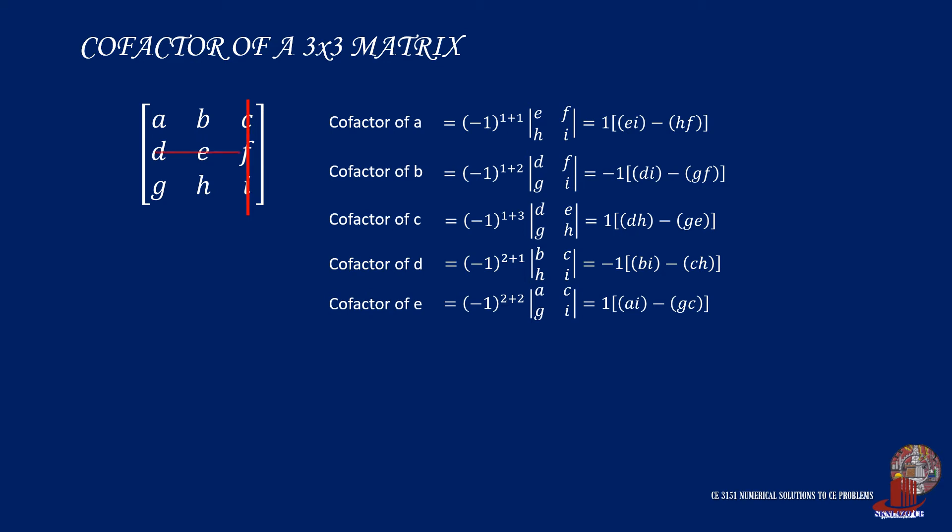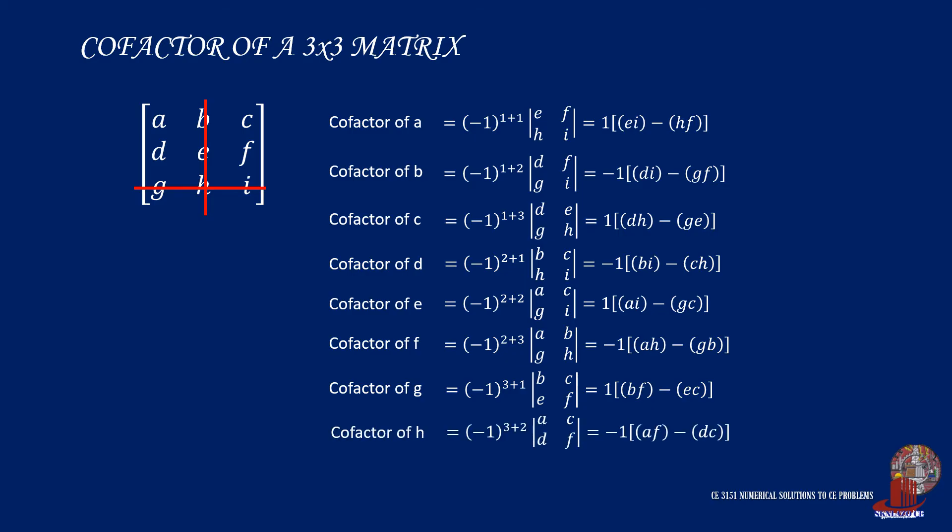For cofactor F, elimination of row and column will show negative 1 times the quantity of AH less GB. Take the cofactor of G as positive 1 times BF minus EC. The cofactor of H can be computed as negative 1 multiplied by AF less DC. And finally, take the cofactor of I as positive 1 times AE less DB. Take note again that with a constant raised to the number of column and row, the interchanging signs in the elements are considered.